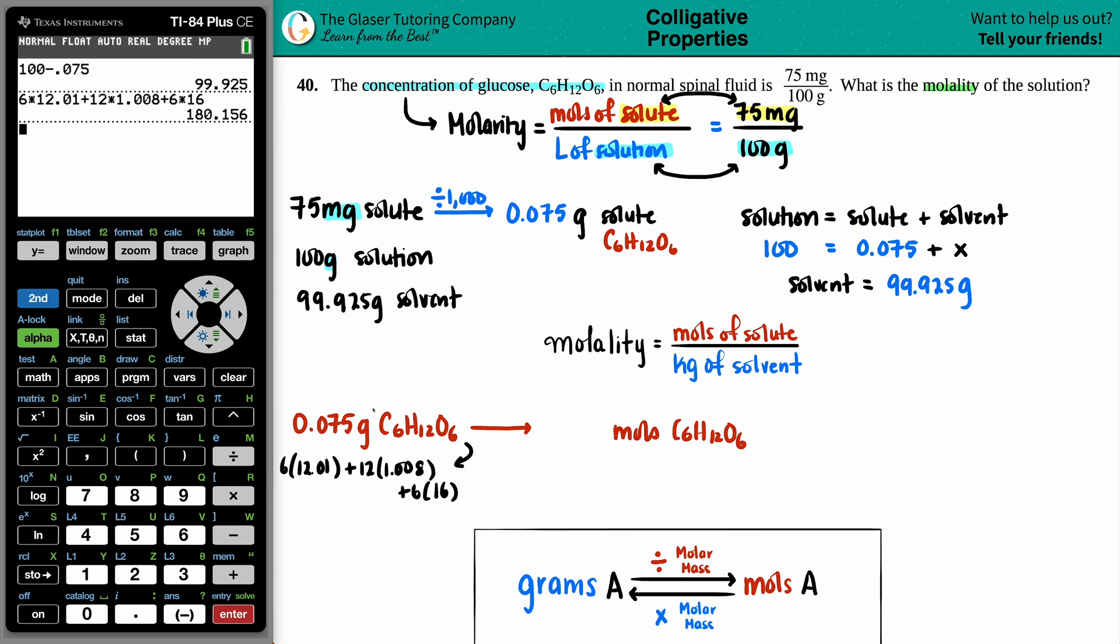So I'm going to take my 0.075 and divide it by 180.156. Divided by that number,